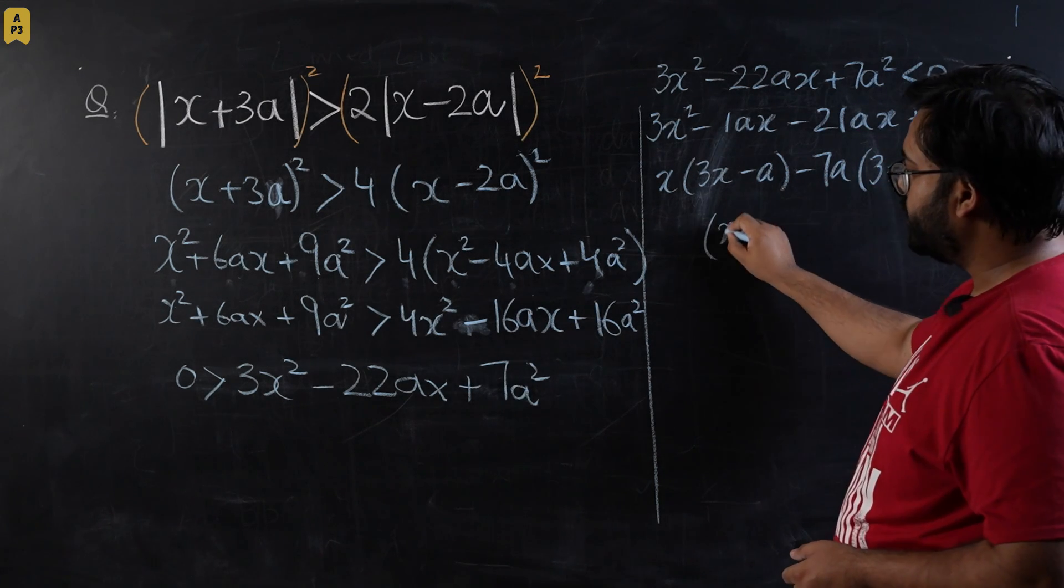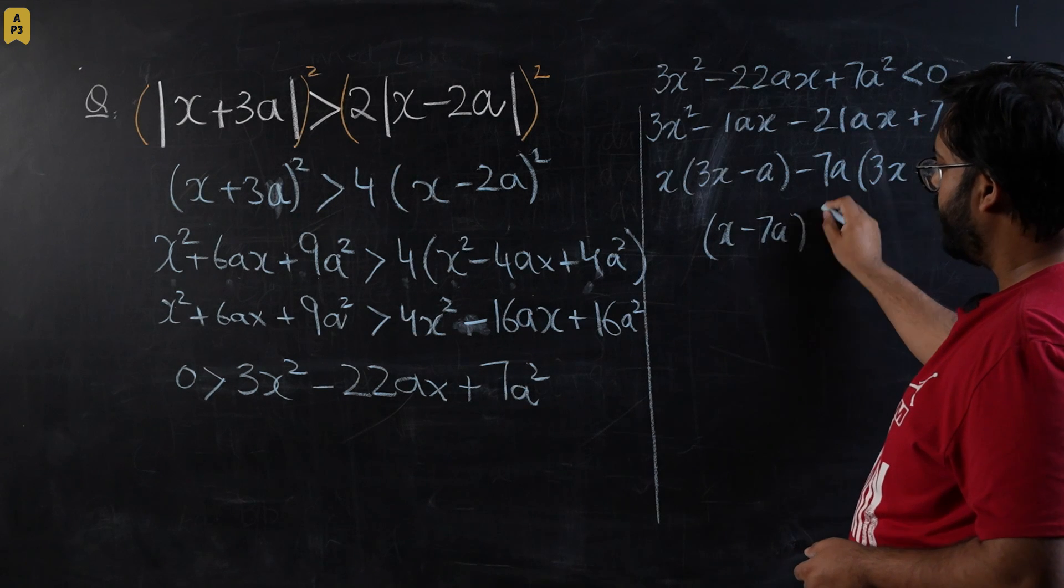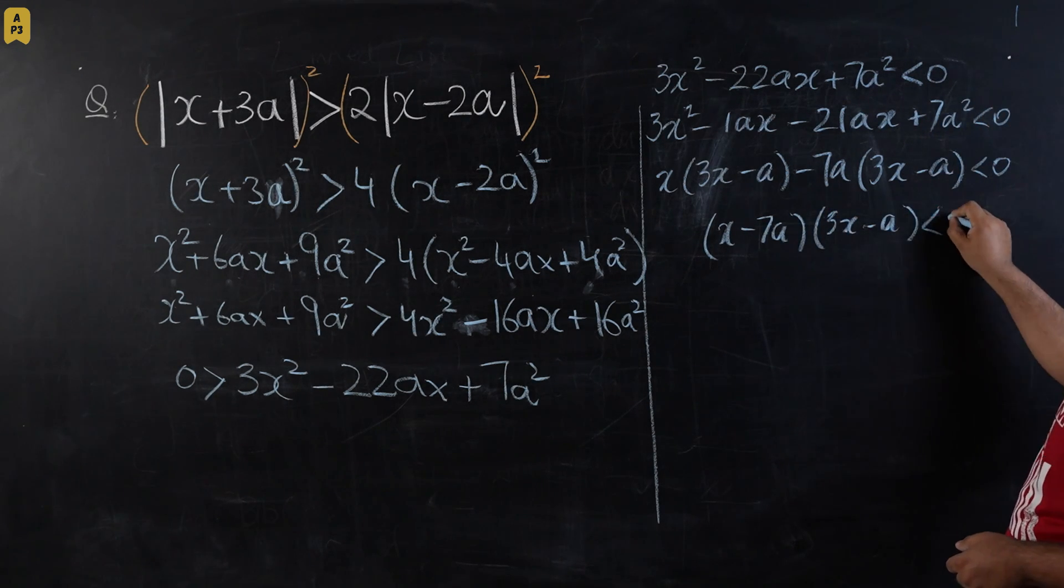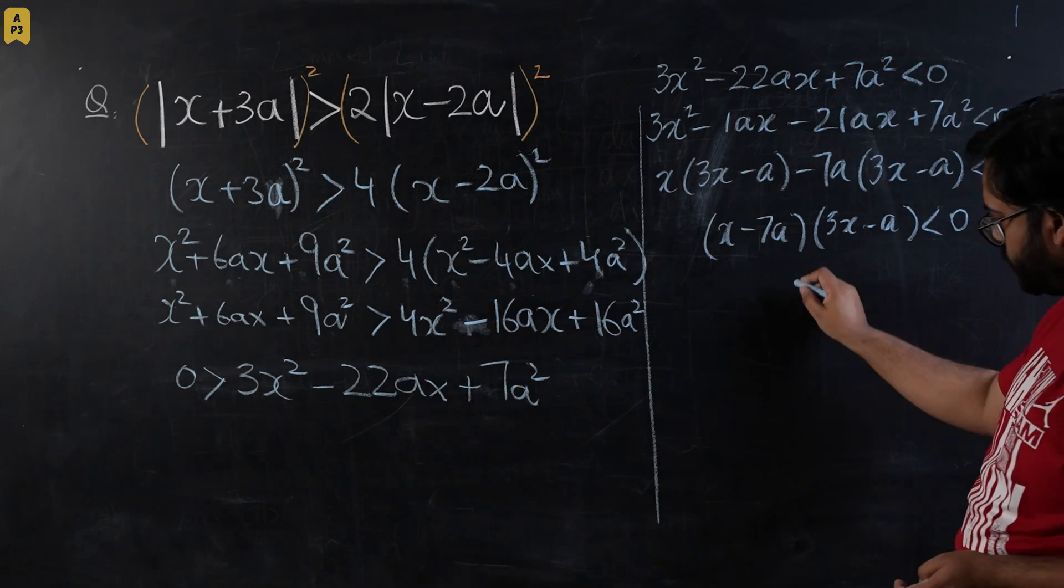So (x - 7a) and (3x - a) should be less than zero. So we have factorized this. Now let's have a sketch for this.